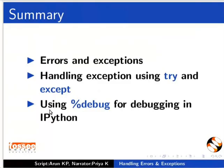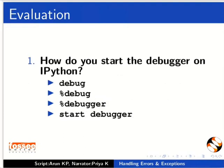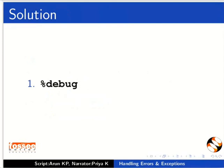This brings us to the end of this tutorial. Let us summarize: in this tutorial we have learned about errors and exceptions, handling exceptions using try and except, and using %debug for debugging in IPython. Here is a self-assessment question: how do you start the debugger in IPython? The answer is: we start the debugger in IPython by typing %debug.